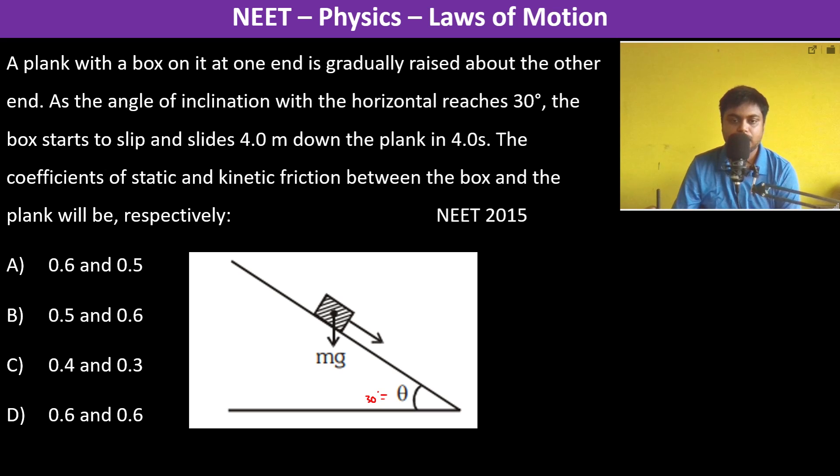We have mg and we have the normal. Now it reaches 30 degrees and it starts slipping, so therefore friction is going to be in this direction. At 30 degrees it was limiting friction, so here we have mg.